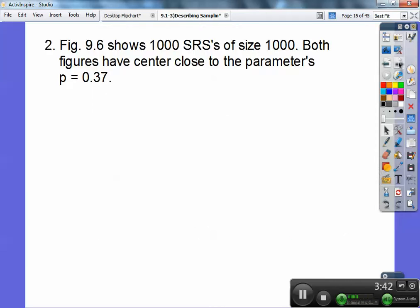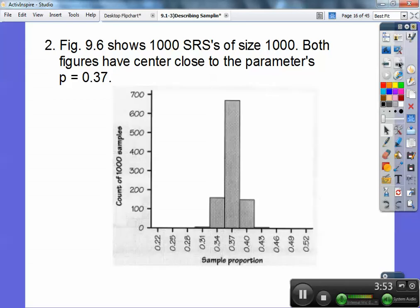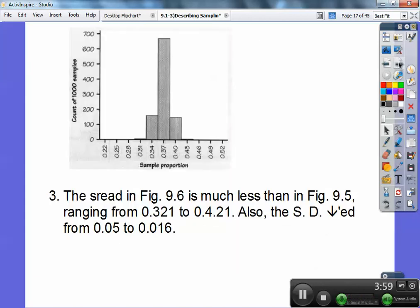Here's figure 9.6. It shows 1,000 SRSs of size 1,000 this time. Both figures have centers close to the parameter of 37%. So here's 1,000 thousands. Look at that.